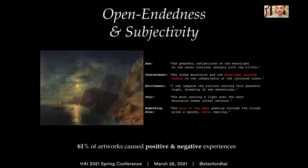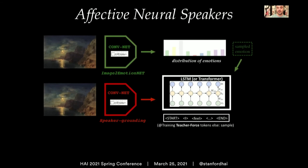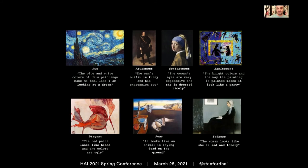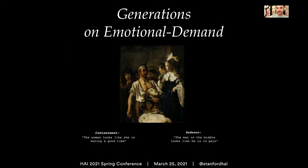Furthermore, with Artemis, we embrace open-ended explanations and the subjectivity that comes along with different individuals. Tapping on our rich dataset, we design neural speakers that, similar to humans, can create explanations to support different emotions, such as these examples on unseen paintings that explain positive and negative emotions. Interestingly, our neural speakers can predict the likely emotion for the painting, or be asked to express different emotions for the same painting.